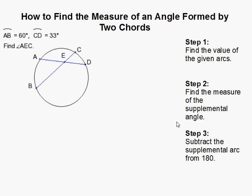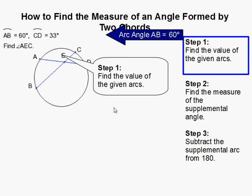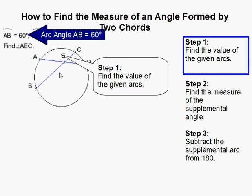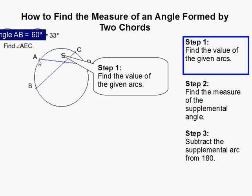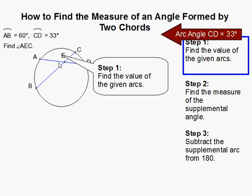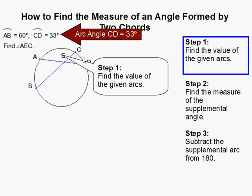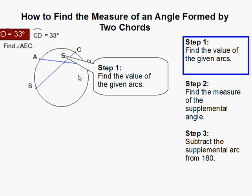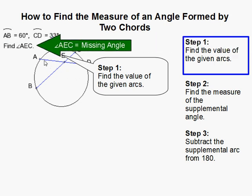I'm going to find the measure of an angle formed by two chords. Let's first find the value of the givens. We're given that arc AB is 60 degrees and arc CD is 33 degrees. But we need to find angle AEC.